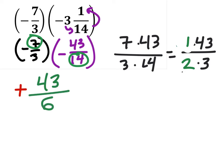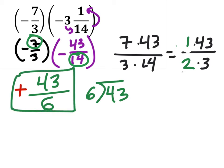And if we needed to, we could change this into a mixed number by taking 43 and divide it by 6. But I'm okay with leaving this as an improper fraction like this. Now, of course, if you wanted to divide and make it into a mixed number, you would have 7 and 1 sixth like this.